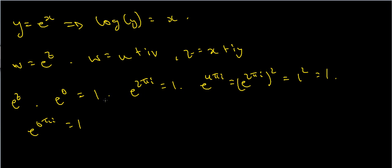So we've got a bit of a problem here. If e to the z isn't even injective — meaning one-to-one — then how can we possibly talk about having an inverse? All of these different inputs, e to the 0, e to the 2πi, all map to the value 1, so we can't possibly have an inverse.